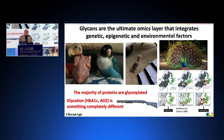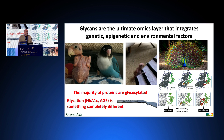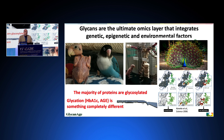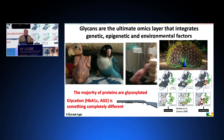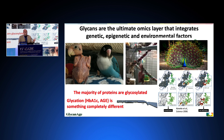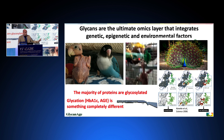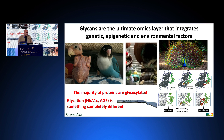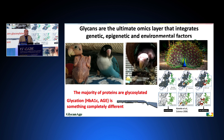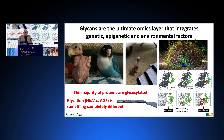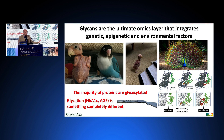Before I go on, one word of caution: glycation is something completely different. Glycation is a chemical reaction between glucose and amino groups on proteins. We usually measure it as HbA1c. We know it's very important, but it has nothing to do with glycosylation.